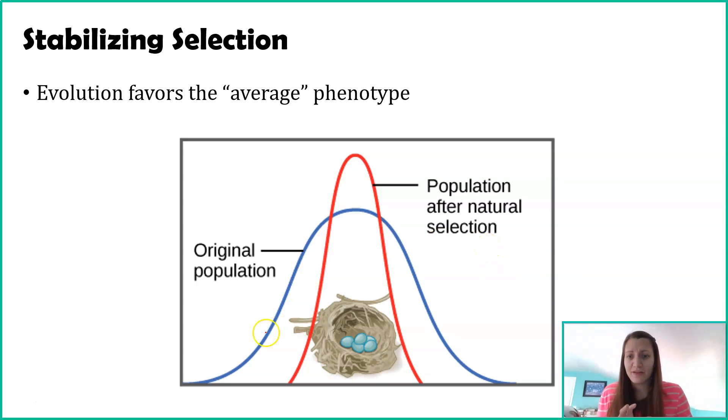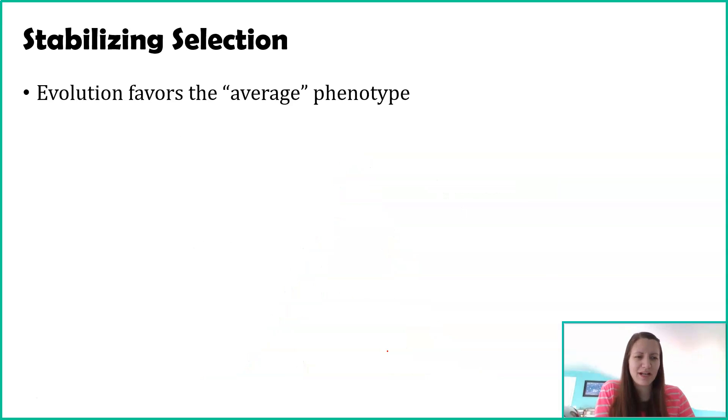Whatever the characteristic is, it's low on one extreme and low on the other extreme, and the middle is usually the top of the bell curve. I'm going to do an example related to humans because this might be easier to comprehend.